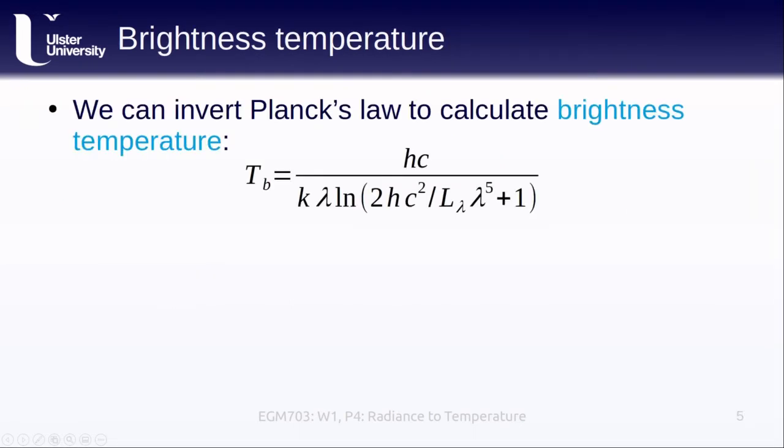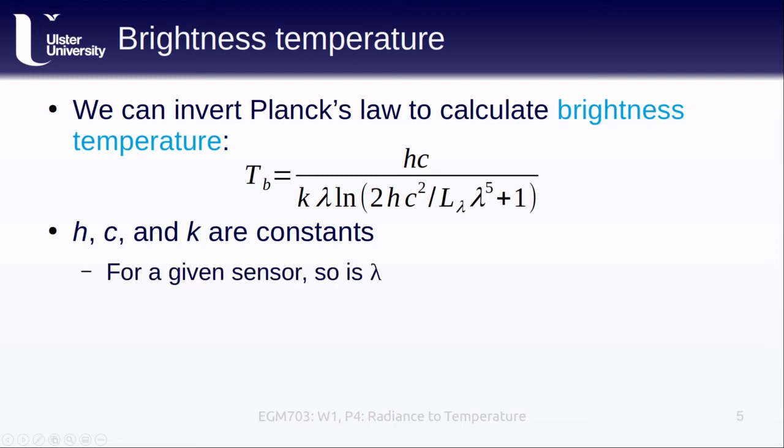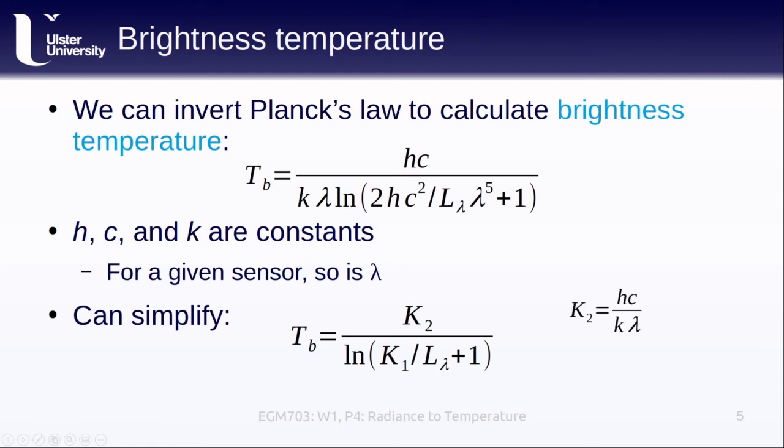When we invert Planck's law, we end up with an expression to calculate brightness temperature. This is the temperature that we would measure if all of the objects in our image were ideal blackbodies. Remember that h, c, and k are all constants, and for a given sensor so is the wavelength. This means we can simplify this equation to the form where k2 equals hc divided by k lambda, and k1 equals 2hc squared divided by lambda to the fifth power. For Landsat images, the USGS gives the sensor-specific values of k2 and k1.